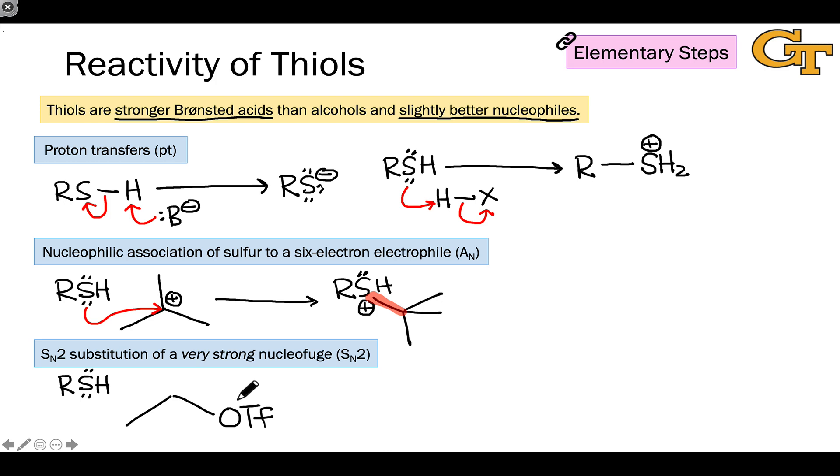We've seen the triflate group before, and recall that this OTF group is a very good leaving group, very strong nucleophuge. Under these conditions, the sulfur again acts as a nucleophile, and essentially displaces the triflate group as the CO bond breaks toward oxygen.